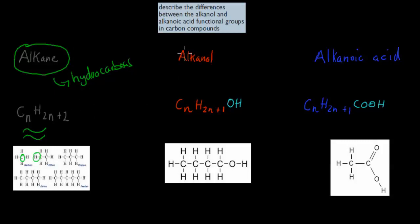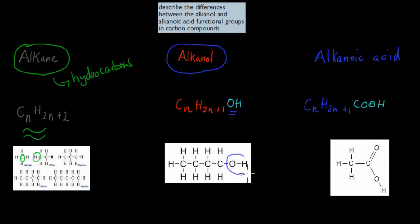The alkanol is a bit different — very similar in structure, but with one difference: the hydroxide group at the end, which is the alcohol group. For example, butanol has 4 carbons — that's why it's called 'but-' — and has this hydroxide group, making it an alcohol, therefore butanol. This hydroxide group is the functional group of alkanols.